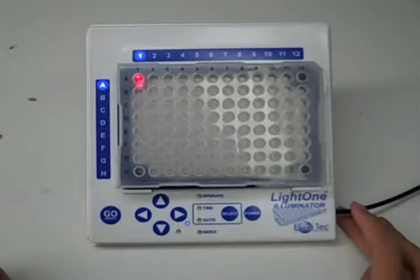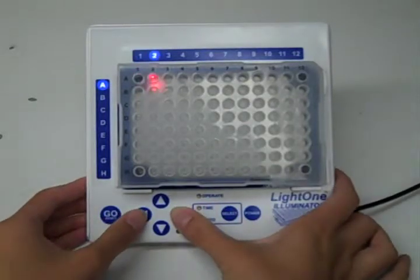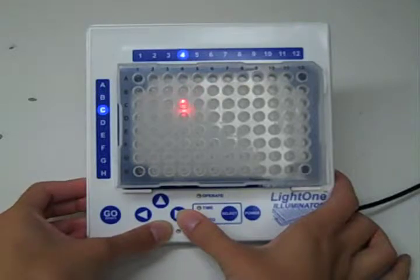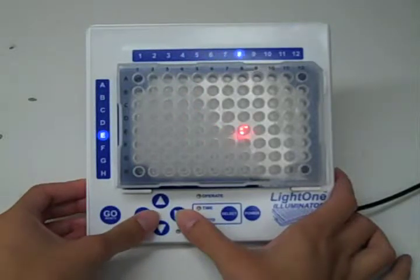The Q Red starts with Manual Mode. You can navigate and move the light around by using the directional arrows, and basically you toggle to the well you want to go to.